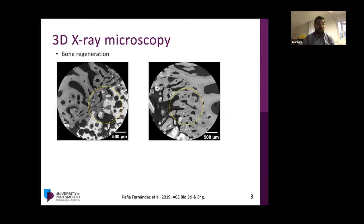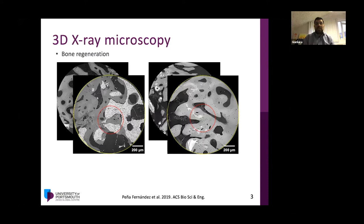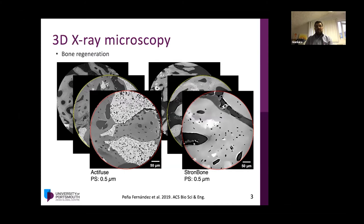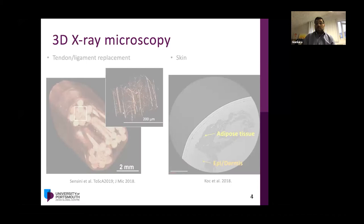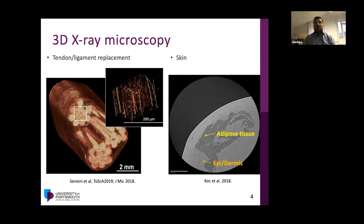Here are some examples of the type of imaging we can achieve with the settings available here. In this particular case, I'm showing regenerated bone via regenerative and integratable biomaterials. The interesting thing is how we can really get into the tissue and get insights at the cellular level during the interaction of these biomaterials and the regenerated bone in vivo. We can also look at electrospun hierarchically structured tendon-ligament replacements, down to skin, where we can distinguish different types of tissues.